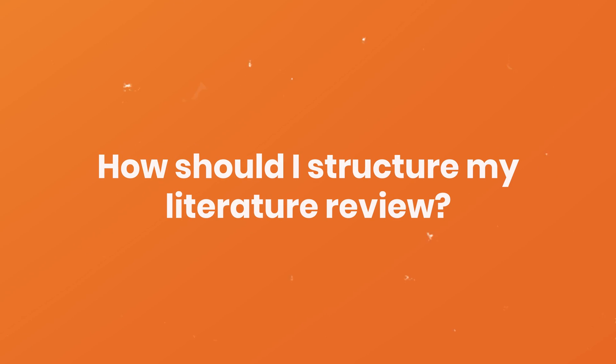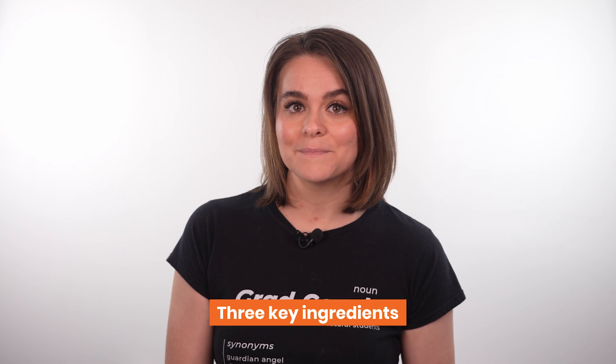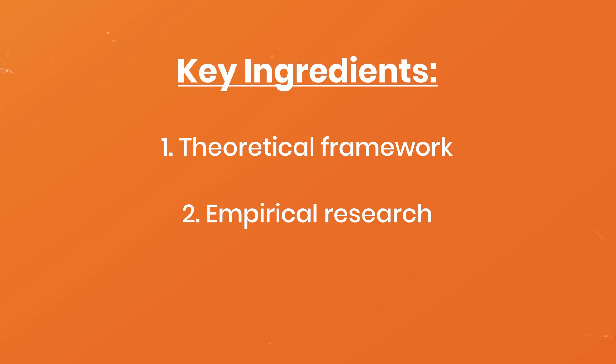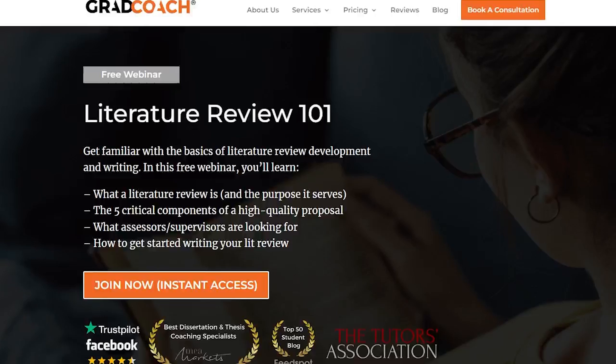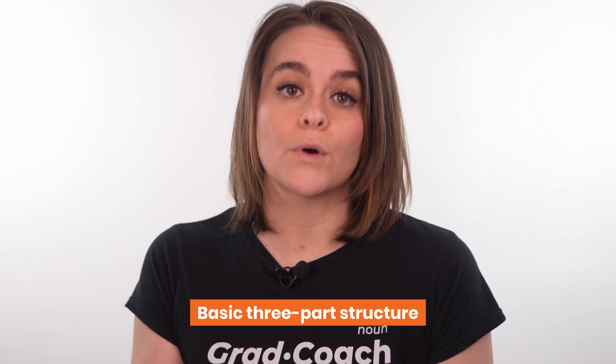At this stage, you might be wondering: how should I structure my literature review? There's no one-size-fits-all solution because the structure will vary based on research topic and research questions. That said, it's useful to know that pretty much all literature reviews feature three key ingredients: the theoretical framework, the empirical research, and the research gap. The theoretical framework, empirical research, and research gap can themselves provide a basic three-part structure for a literature review.